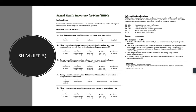What is the other name for IIEF-5? It's also called the SHIM scoring — Sexual Health Inventory for Men. What is the difference between IIEF and IIEF-5/SHIM? IIEF-5 is limited to five questions, whereas the full IIEF has a much more extensive range of questions. It also asks more extensively about satisfaction in more domains, such as ejaculatory function, orgasmic function, libido, and overall satisfaction.